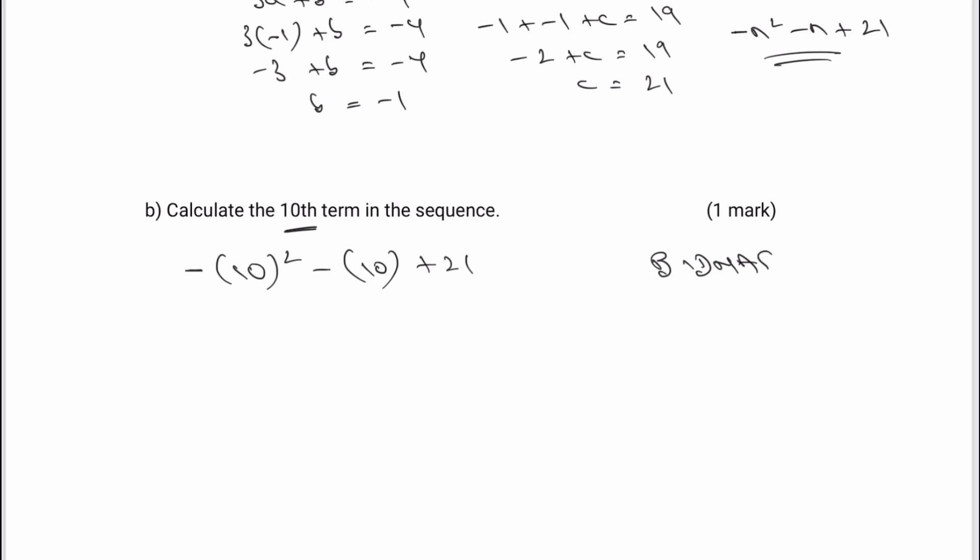Okay, so therefore, what we're looking at is going to be 10 squared, which is going to be 100, but then I have a minus in front of it. So it's going to be minus 100, minus 10, plus 21, and that's going to give us a value then of minus 89. So the 10th term in this particular sequence will be minus 89.